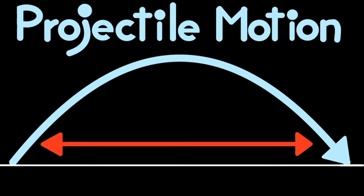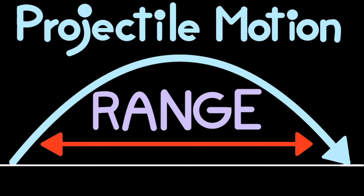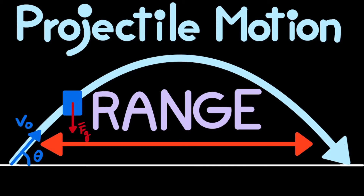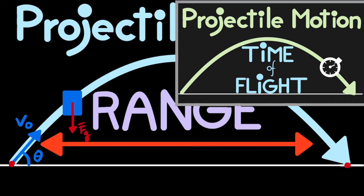In this short video, we are going to derive the formula needed to calculate the range in projectile motion. As a recap, projectile motion is the trajectory that an object follows when it is catapulted into the air with an initial velocity v₀ and with only gravity acting on it, pulling it back down. The range is the difference in position from where the object started at launch and where it reaches the ground again. The derivation is very similar to deriving the formula for the time of flight, which I did in a previous video.